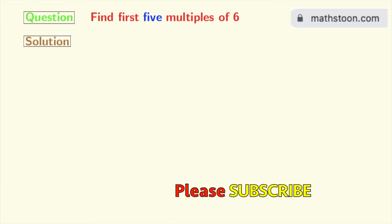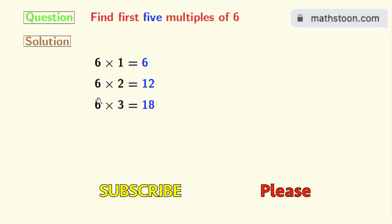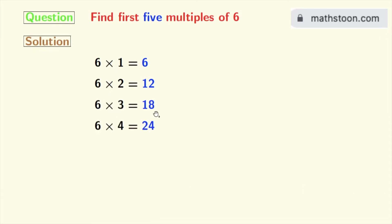Now let's do it. 6 times 1 is 6, 6 times 2 is 12, 6 times 3 is 18, 6 times 4 is 24, and 6 times 5 is 30.